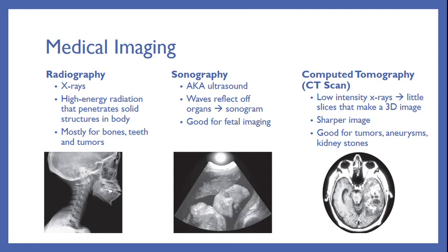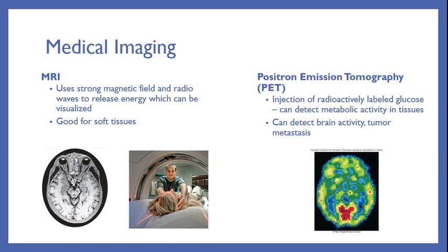The final two are MRI, which uses a strong magnetic field and radio waves to release energy that can be visualized. MRI is awesome for soft tissue — if you have a muscle injury, an x-ray will just show you your bones are in proper position, but an MRI will show you the actual muscles and can detect any swelling or tears. Last, we have the positron emission tomography, or PET. This is where we inject radioactively labeled glucose. When the body takes up the glucose, certain areas — a tumor for example — are going to pick up a lot of that sugar and concentrate it. By detecting that concentration, we can detect metabolic activity in the tissues, and use this to detect brain activity or a tumor starting to metastasize.